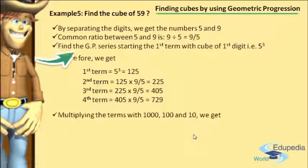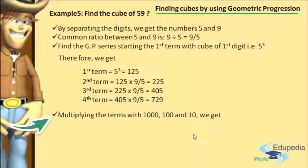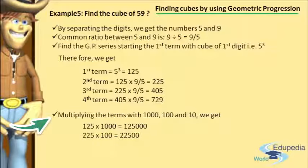In step number 4, we multiply the first term by 1000, the second term by 100, and the third term by 10. So: the first term 125 × 1000 = 125,000; the second term 225 × 100 = 22,500; and the third term 405 × 10 = 4,050.